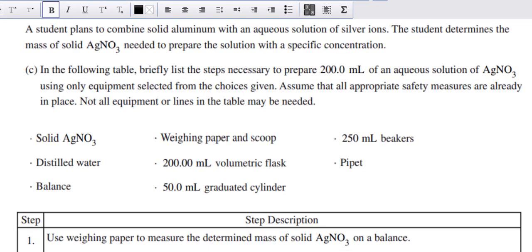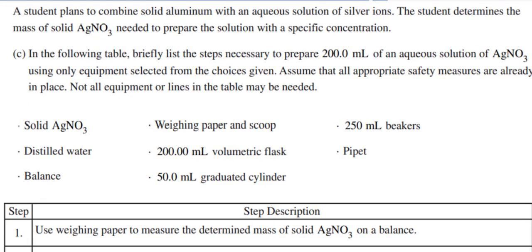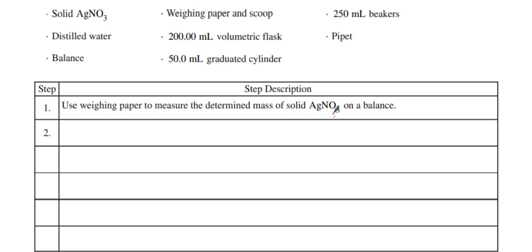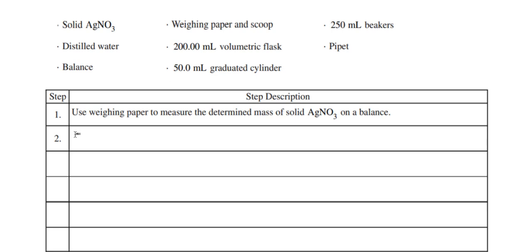Now it says the student plans to combine solid aluminum with aqueous silver ions. They're preparing 200 mL of an aqueous solution of silver nitrate, and they're asking the student to write their procedure. The first thing given is: use weighing paper to measure the determined mass of solid AgNO3 on a balance.